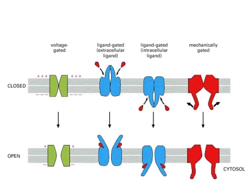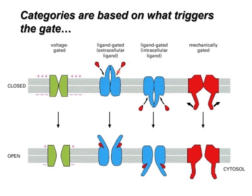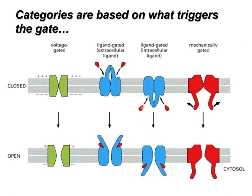Examples of gated channels: a voltage-gated channel is open at one voltage but not another. Ligand-gated channels can be gated by extracellular or intracellular signals. Here is a mechanically gated channel — it uses physical force to open and close the channel. We'll see examples of these several times in future lectures.